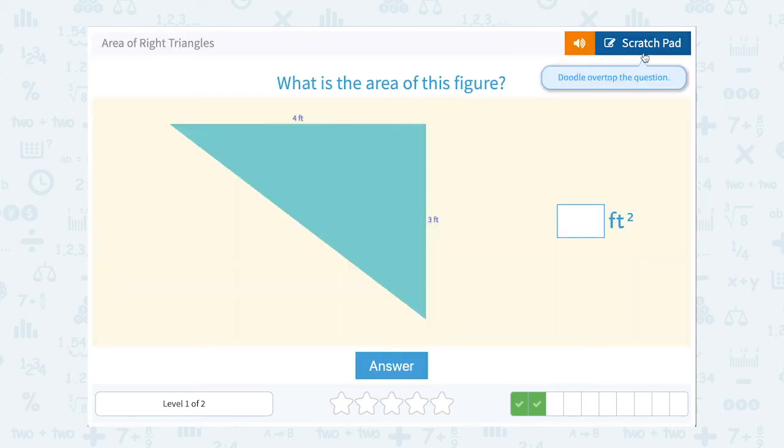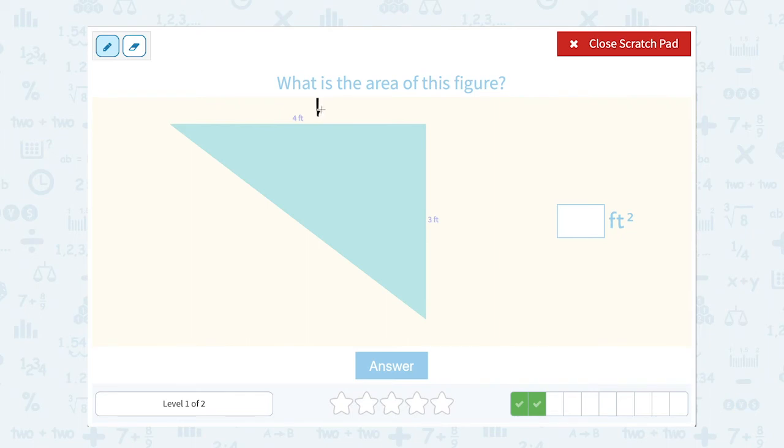What is the area of this figure? Well we can call these two sides base and height since they appear to make up our 90 degree angle of this right triangle. And then we can use our formula area is equal to one half the base times the height.